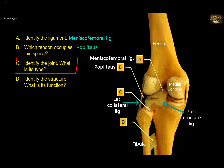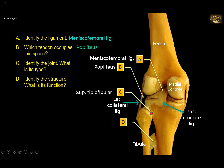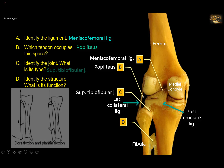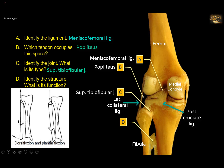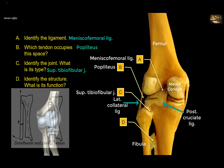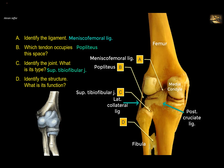Identify joint C. C is the proximal or superior tibiofibular joint. It is a plane type of synovial joint and allows only a minor degree of gliding that takes place during dorsiflexion and ankle flexion. Note that this joint does not communicate with the cavity of the knee joint, unlike the superior or proximal radio-ulnar joint, which communicates with the cavity of the elbow joint — the counterpart of the knee joint in the upper limb.